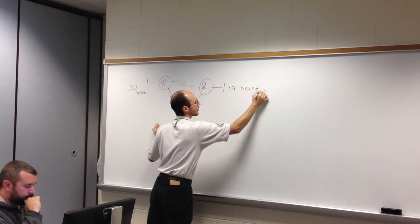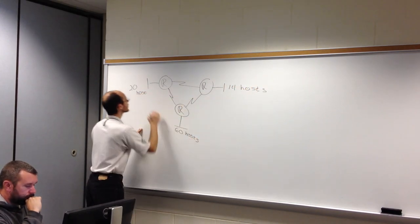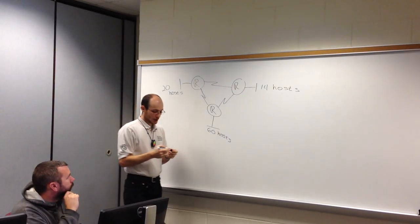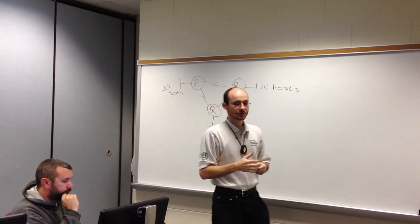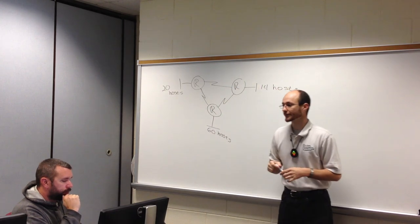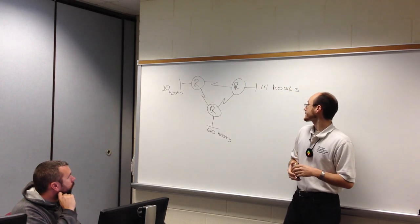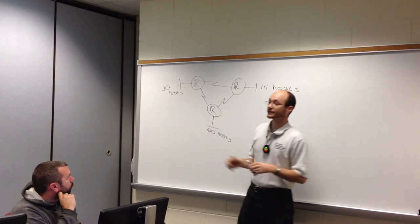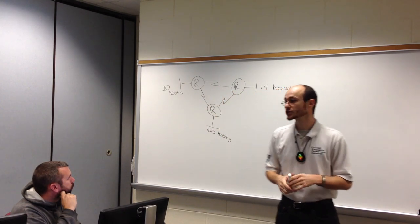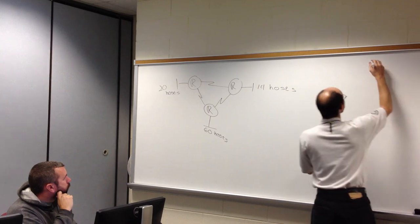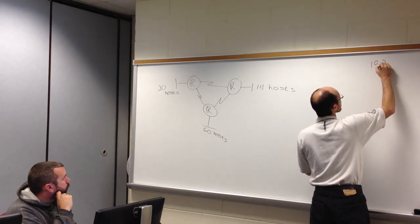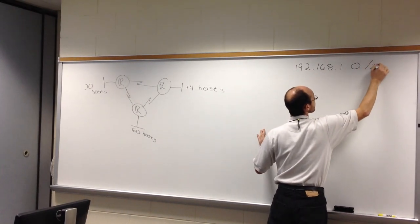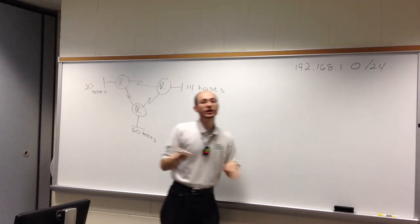How many networks do you see in this topology? I have three local area networks and three WANs. Initially, if I were given a network address of 192.168.1.0/24, that was my original block.